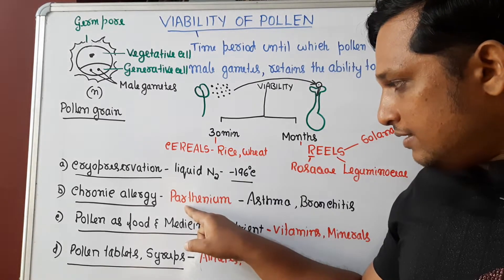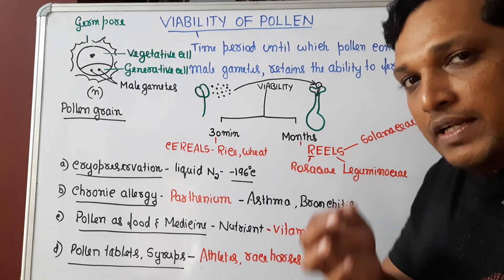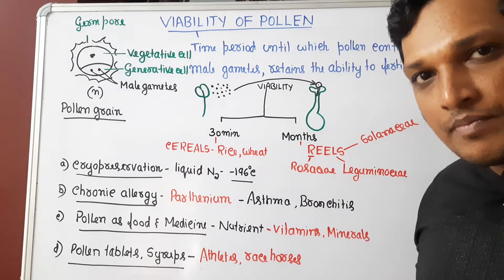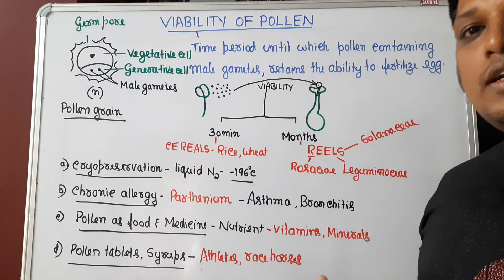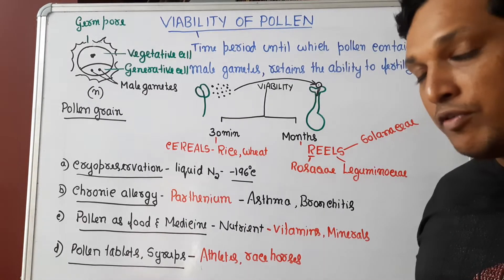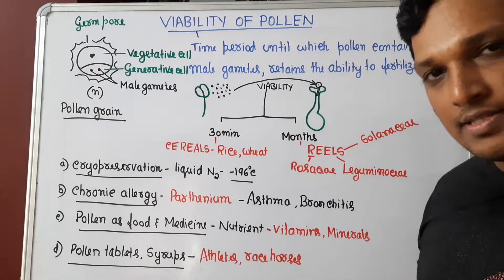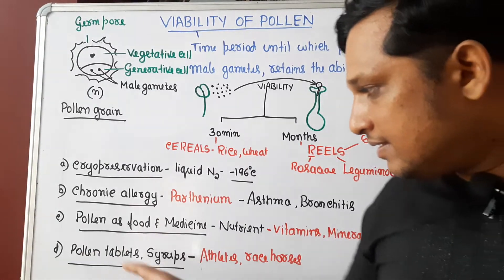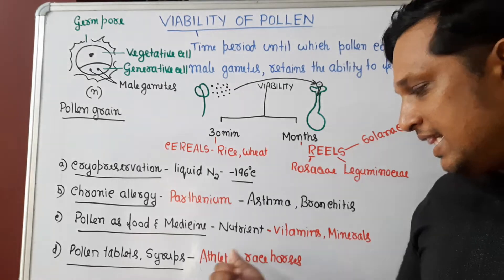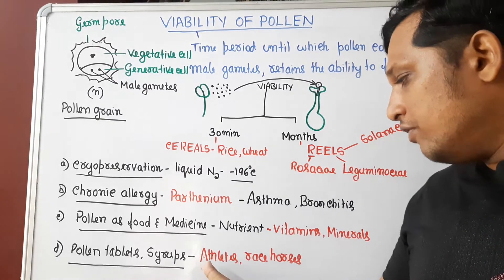Pollen grains from plants like Parthenium, also known as carrot grass, a common weed, can enter the respiratory tract and cause allergies such as asthma and bronchitis. However, pollen can also be used as food and medicine. From ancient times, humans have used pollen because it is rich in nutrients, vitamins, and minerals. Western countries have now prepared bee pollen tablets and syrups, which are fed to athletes and race horses and have been found to increase their performance.